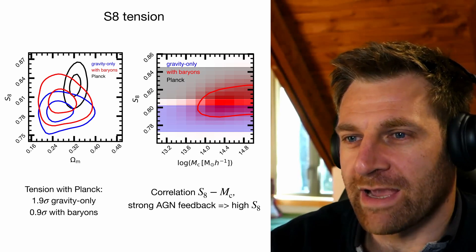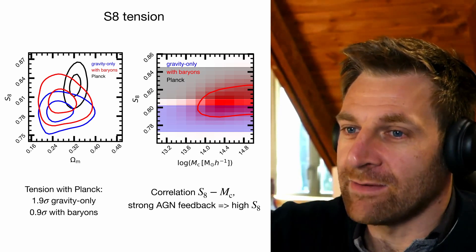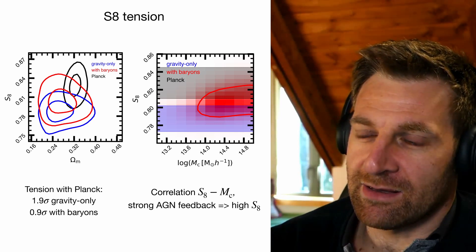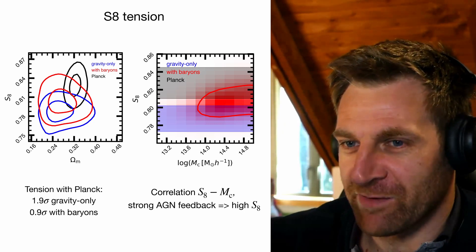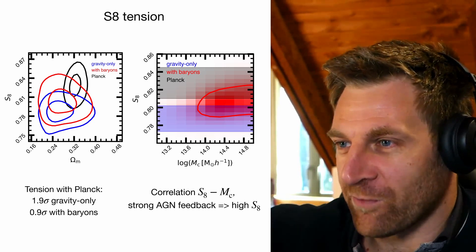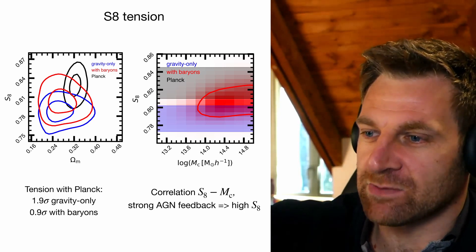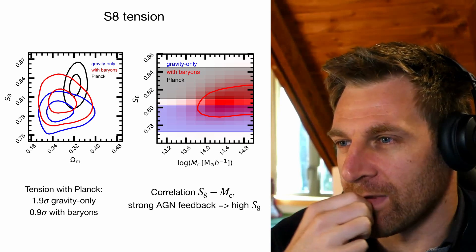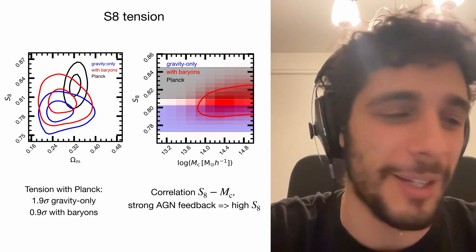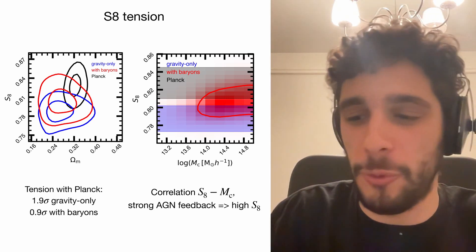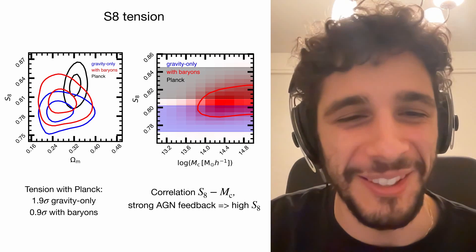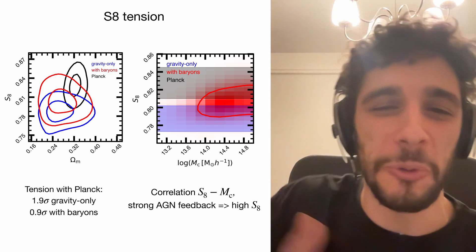An important point: no one has actually done the gravity-only, no-scale-cuts analysis and claimed a large tension. Everyone has had scale cuts. I misread the paper thinking the blue contours were what DES obtained, but DES applied scale cuts which also pull everything up. So the blue would be what you'd get analyzing all DES scales without any baryonic model — nobody has been that extreme — but that would have been the result.